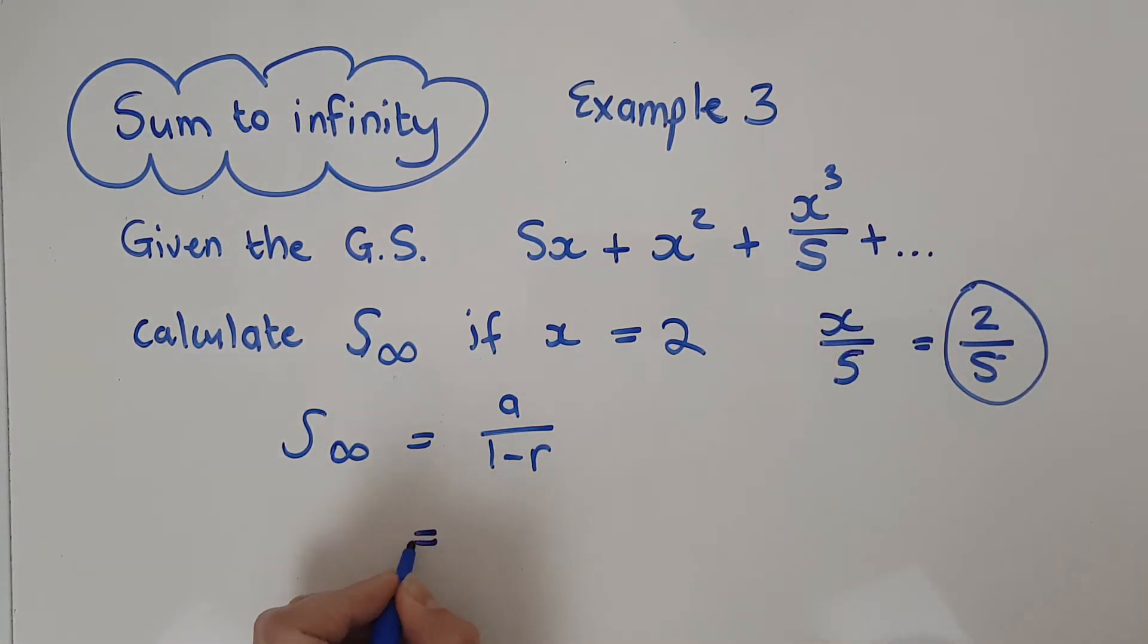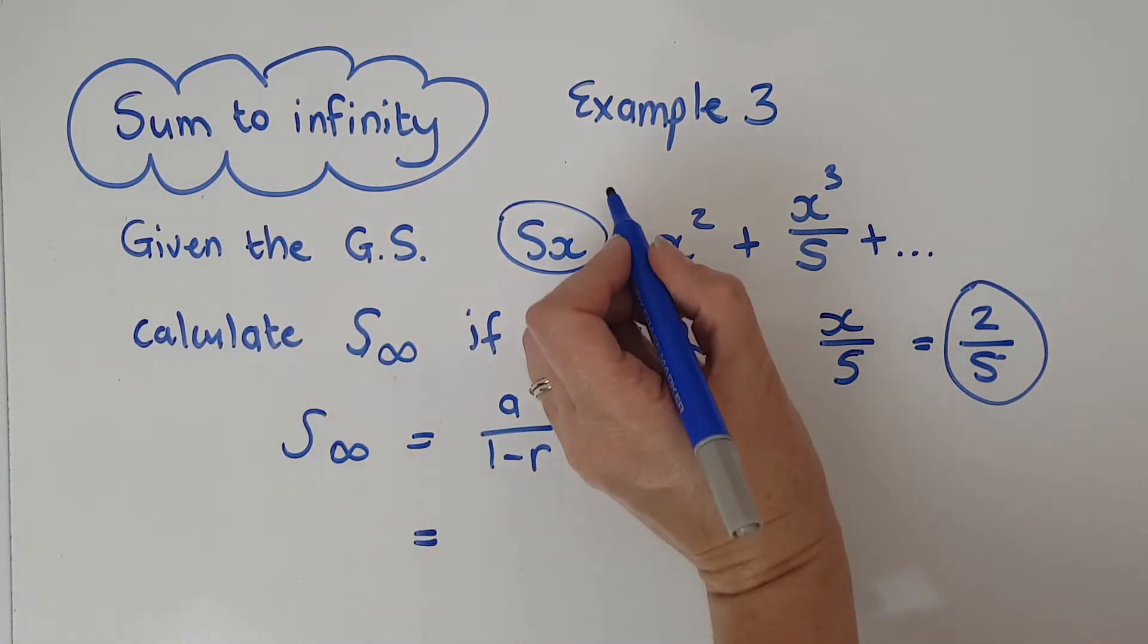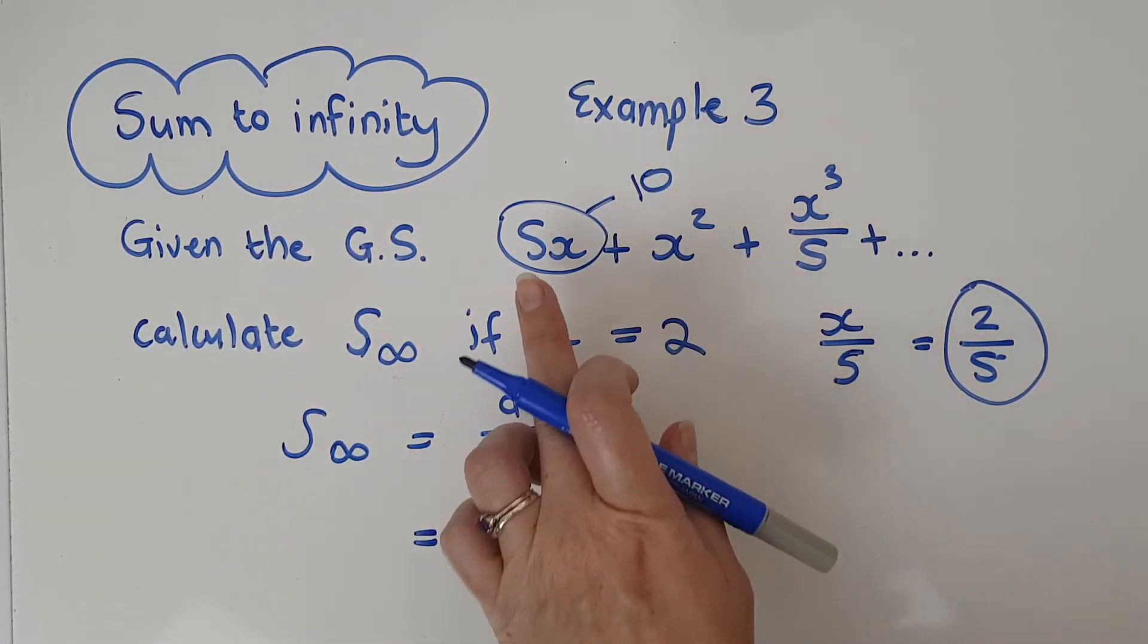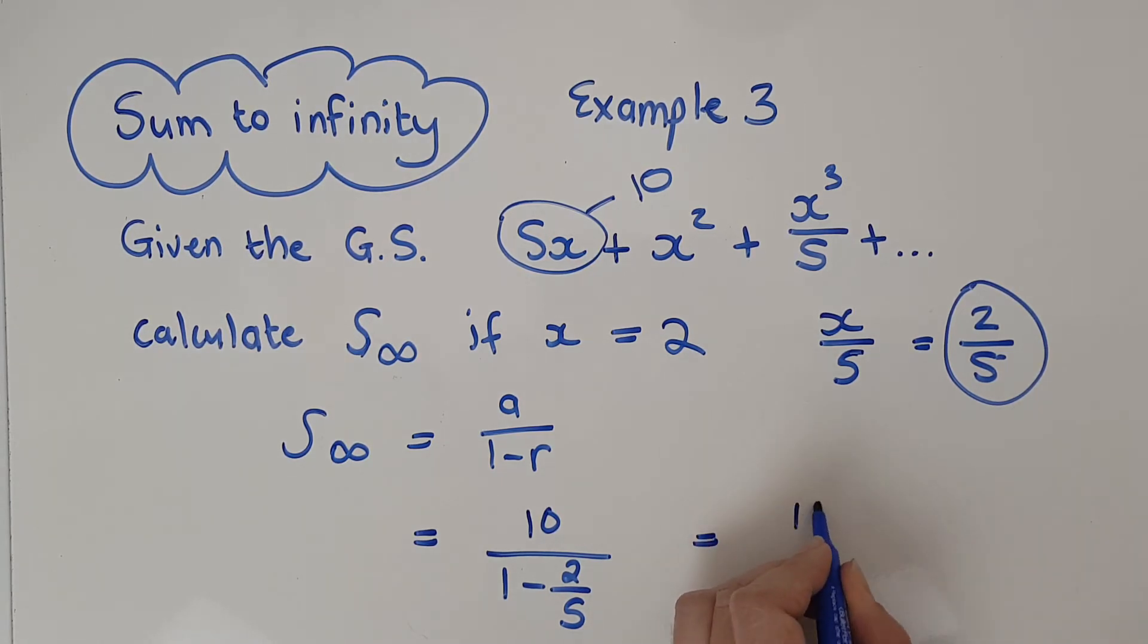So now I know that this is my r. So my sum to infinity is a. Hmm, don't know what a is, but I do have something. I've got 5x, so a is going to be 10 because it's going to be 5 times 2, so I do have it. So 10 over 1 minus 2 fifths. So that is 10 over 3 fifths. I'm just going to pop that in to calculate and I'm going to get 50 over 3.